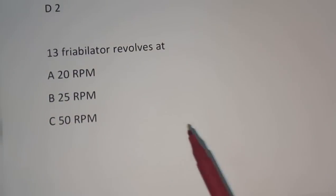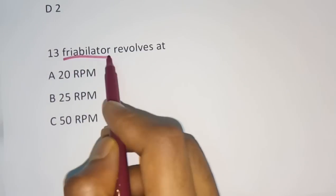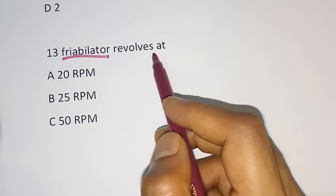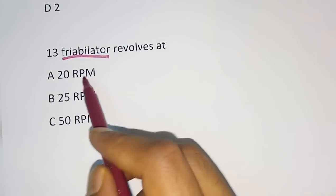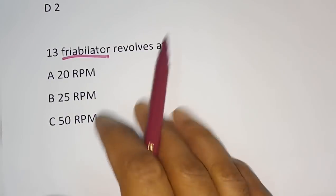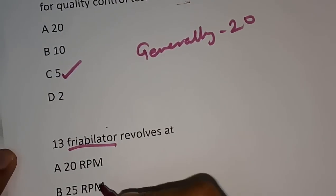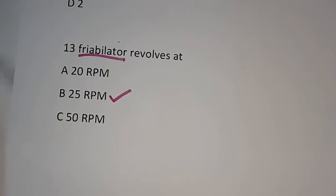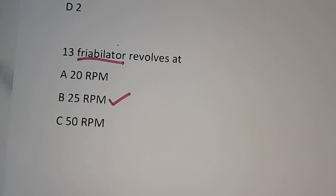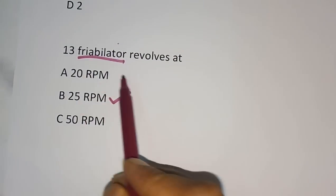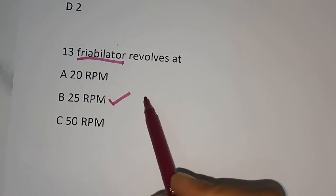Question number 13: The friability tester revolves at how many RPM? Options are 20 RPM, 25 RPM, 50 RPM, or 55 RPM. The friability tester works at 25 RPM, meaning 25 revolutions take place per minute in the friabilitor.